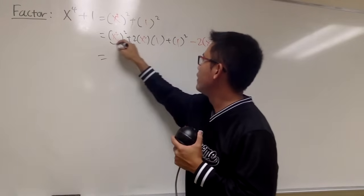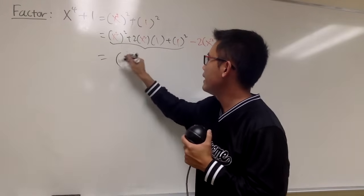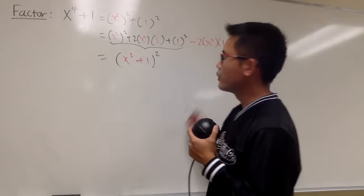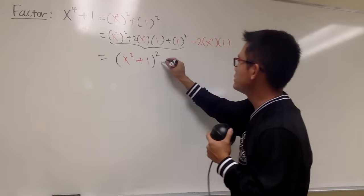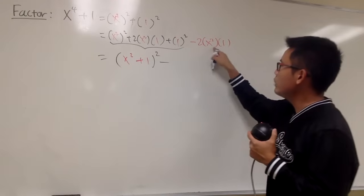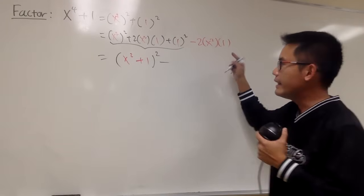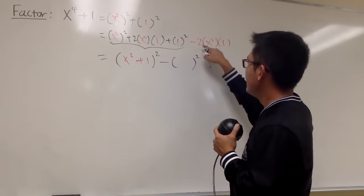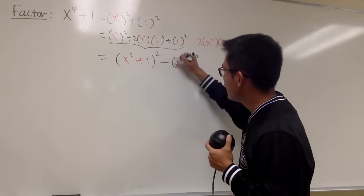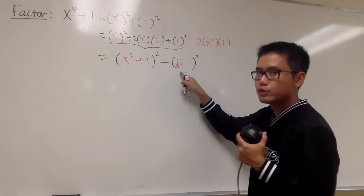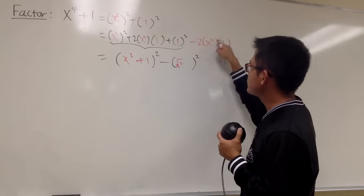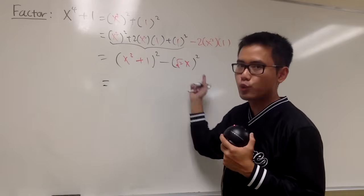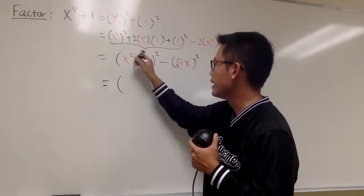You see the first three terms give us x squared plus 1, squared. And then for this, we know this is just going to be a minus 2x squared. Let me put that into something squared as well. So inside the parentheses, since we have a 2, that means inside we will have to have a square root of 2. Square root of 2 squared is 2, and then this is x squared, so I have to have the x right here.